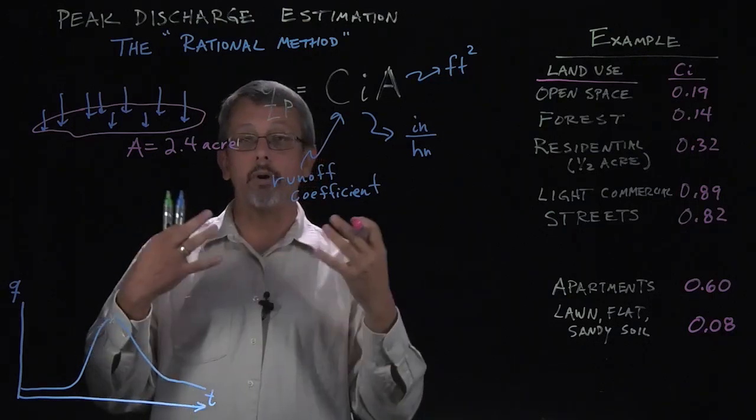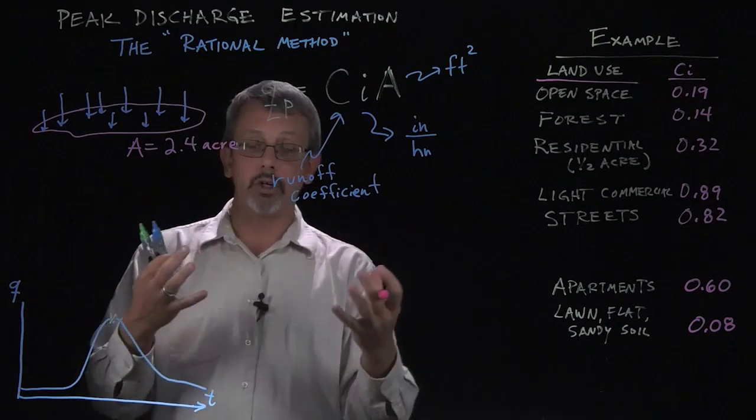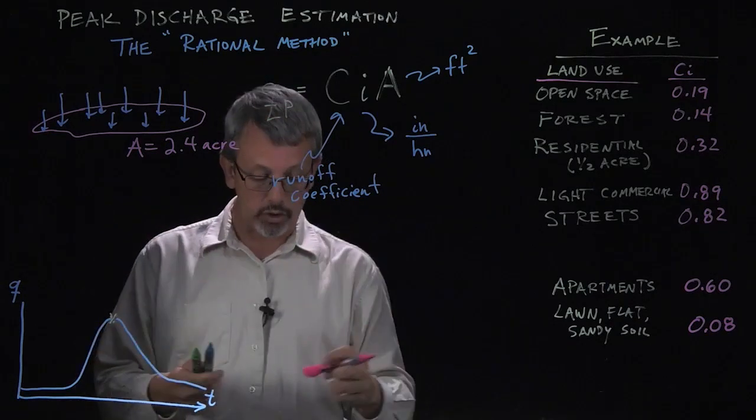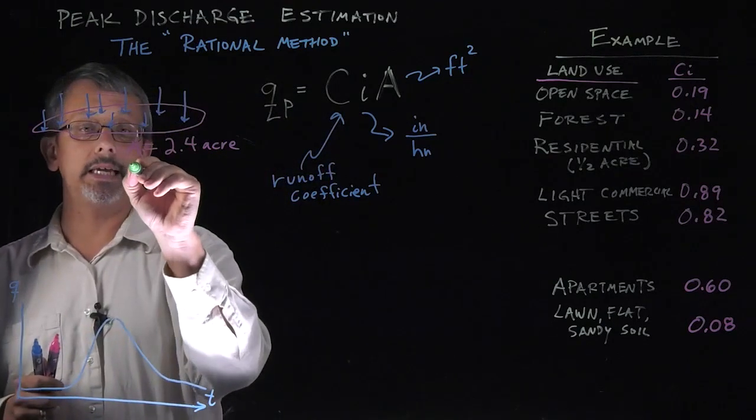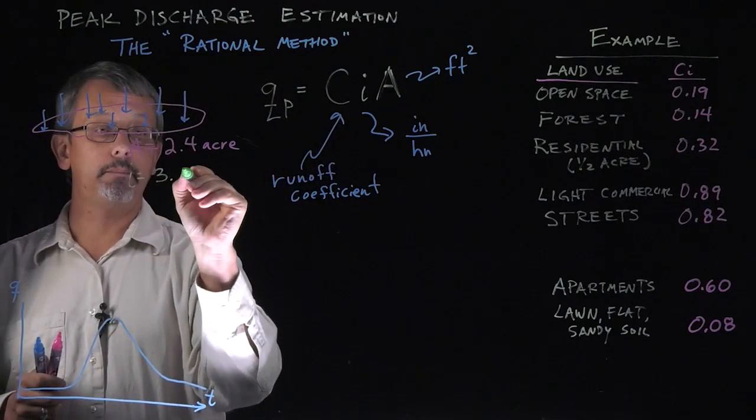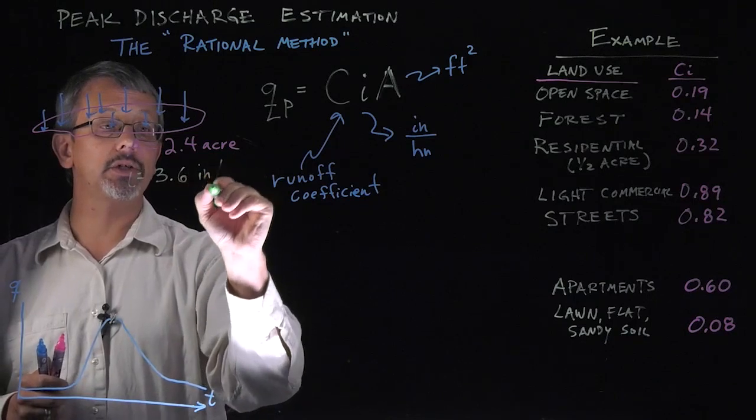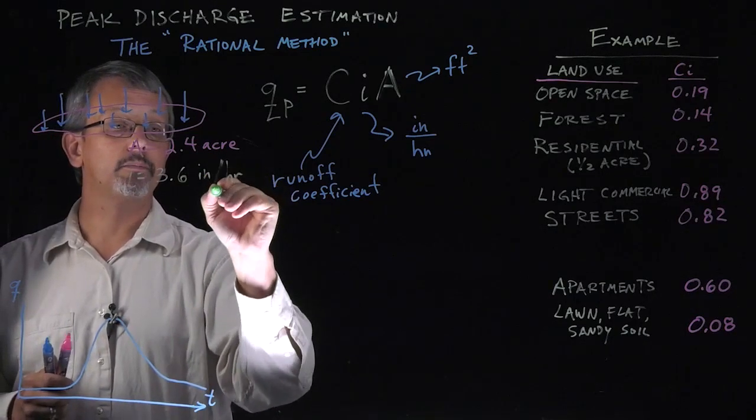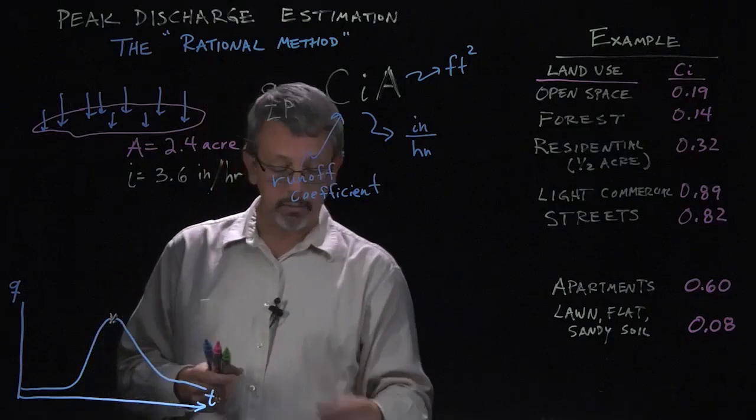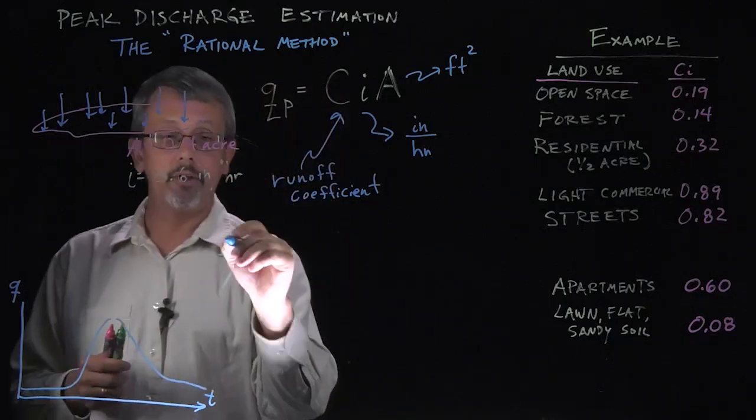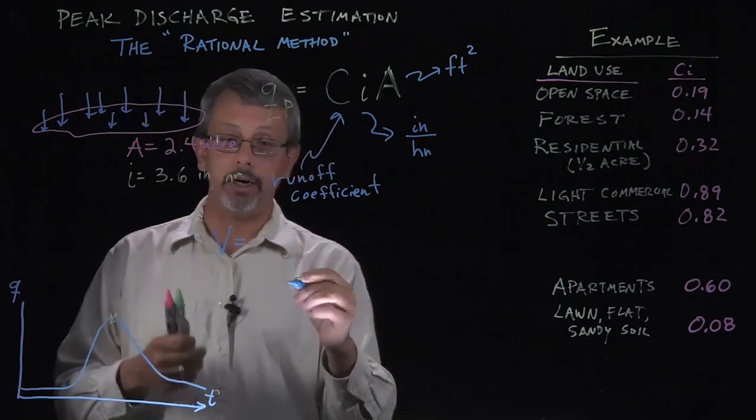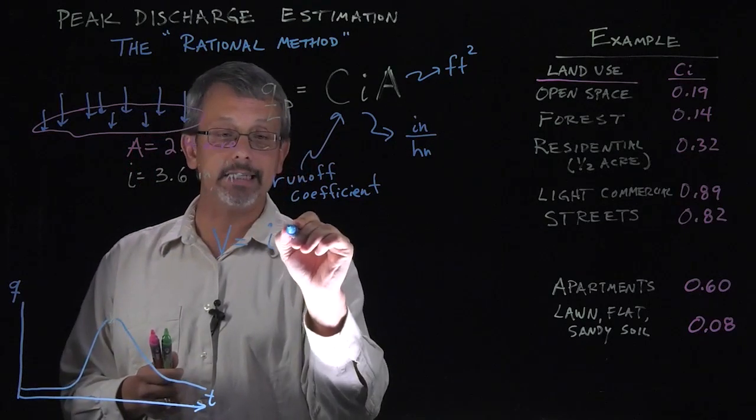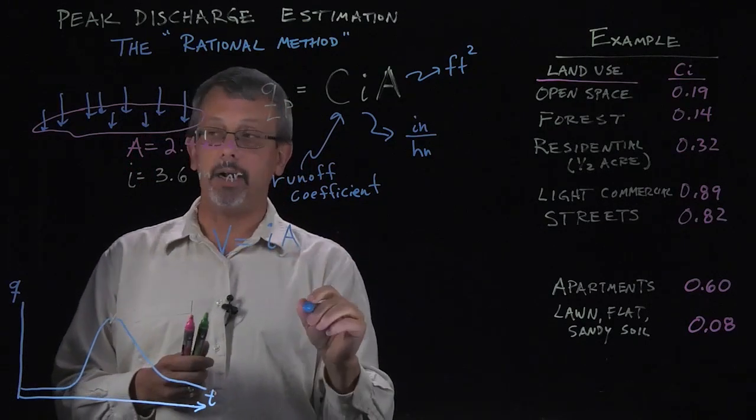We look up our intensity duration frequency curves and we find out that a 25-year storm in a particular area might have an intensity of 3.6 inches per hour. Well, what I'm going to do is I'm going to consider the volume, the total volume that's going to fall on this particular area is going to be equal to that intensity times the area.